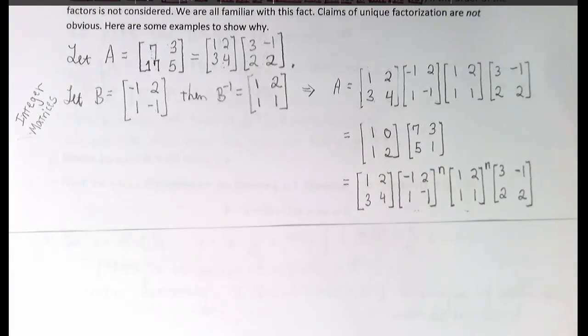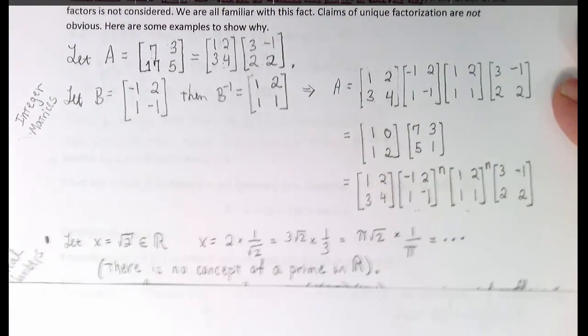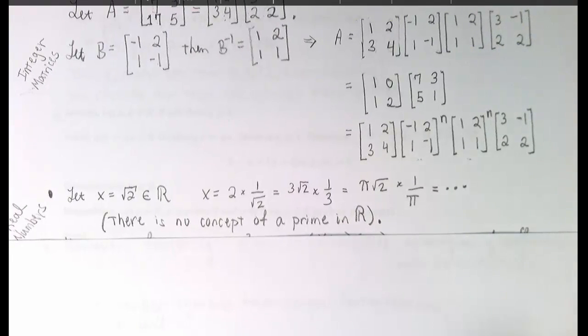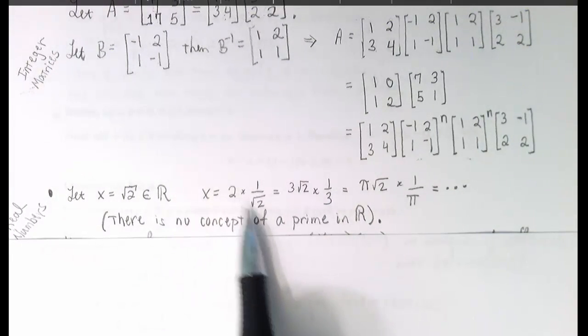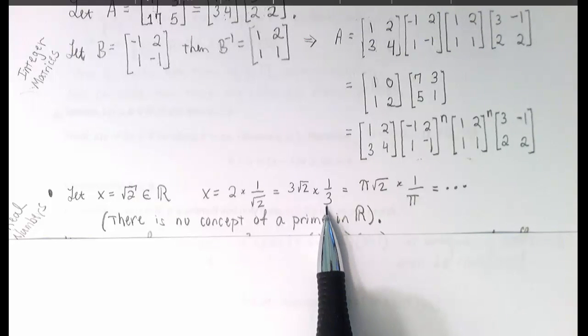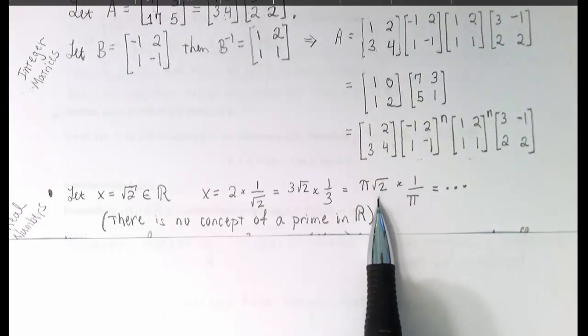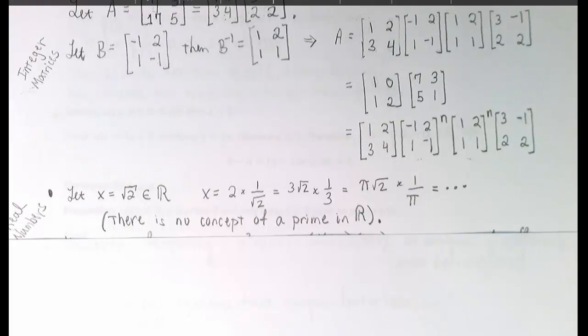Let's look at another example. What about the real numbers? Let's pick the number square root of two. Is that factorable? Certainly. √2 is equal to 2 times 1 over √2. And it's 3 times √2 times one third. And it's π times √2 over π, and there are infinitely many ways that we could factor square root of two in the real number system. In fact, there isn't even a concept of a prime number in the real number system. Every real number can be factored in non-trivial ways. So, there is no possibility of a theorem of unique prime factorizations in the reals.